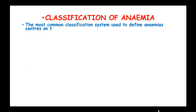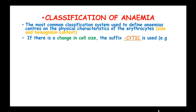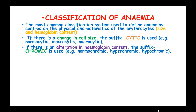The most common classification used to define anemias centers on the physical characteristics of the red blood cells, like the size and hemoglobin content. If there is a change in cell size, the suffix '-cytic' is used, such as normocytic, macrocytic, or microcytic anemias. And if there is an alteration of hemoglobin content, the suffix '-chromic' is used, like in normochromic, hyperchromic, or hypochromic when we have low hemoglobin content.